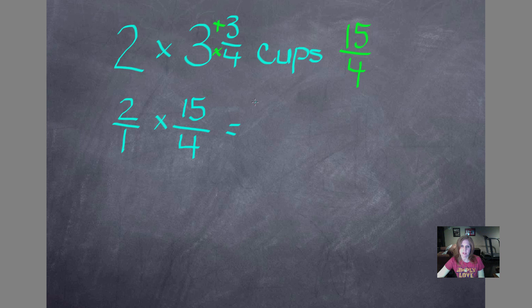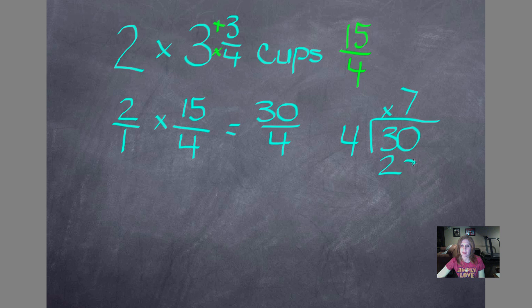Look how much easier this will be to multiply. Multiply our numerators: 2 × 15 = 30, and 1 × 4 = 4. But we have an improper fraction, so we're going to send that number home to the house. 4 goes into 30 seven times. 4 × 7 = 28. 30 - 28 = 2. That's my remainder. When we're dividing with fractions, our remainder becomes our numerator, and our denominator stays the same. But I know I can simplify 2/4. Two is half of four, so this is actually 7½ cups of sugar.